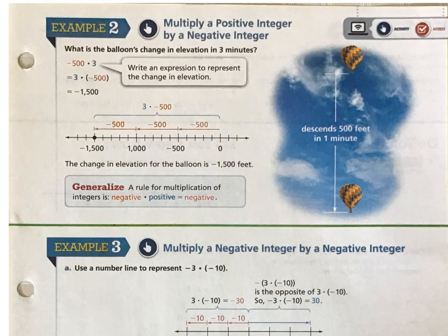Now let's take a look at example 2. Multiplying a positive integer by a negative integer. It's very similar to example 1, but we need to look at a case where the numbers are switched in their position.